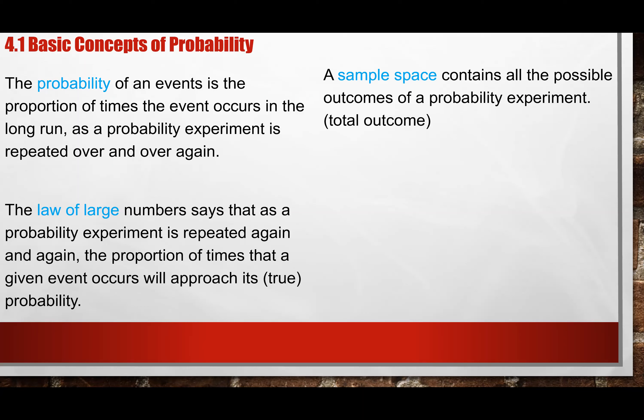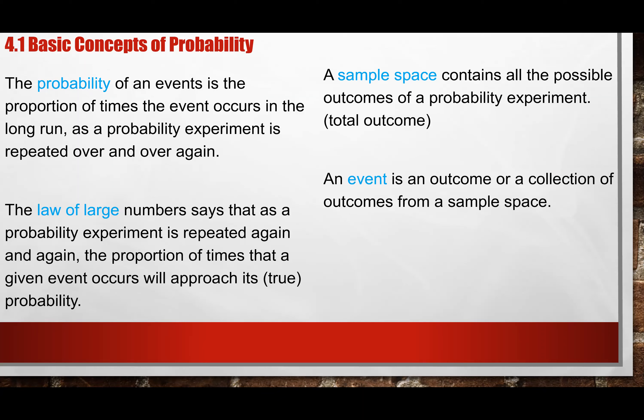Another definition is sample space. The sample space is basically the total outcome of your experiment. If I flip a coin, the sample space is heads and tails. If I roll a dice, the sample space is one dot, two dot, three dot, four dot, five dot, and six dot. If I pick a card, there are 52 cards — whatever outcomes can come out, that's your sample space.